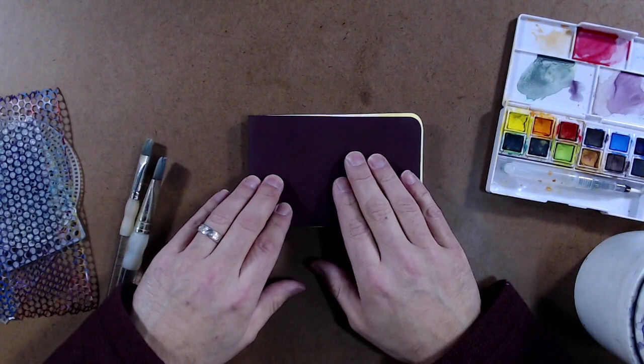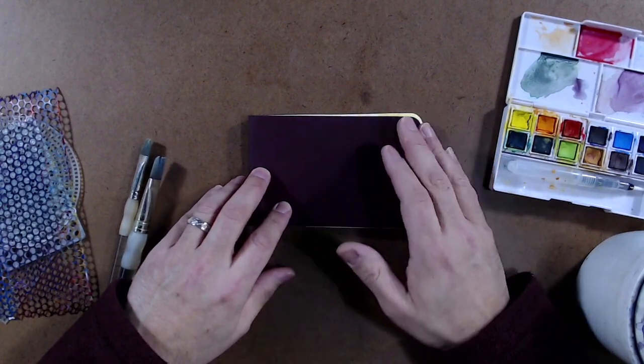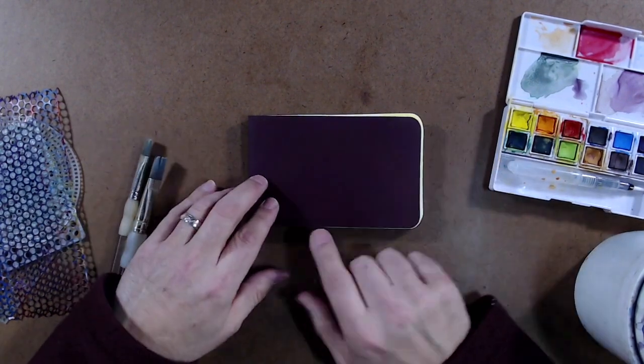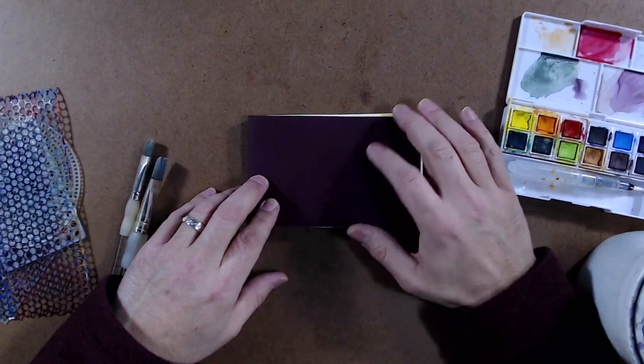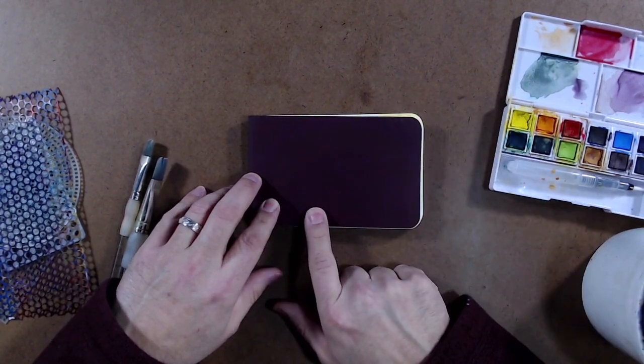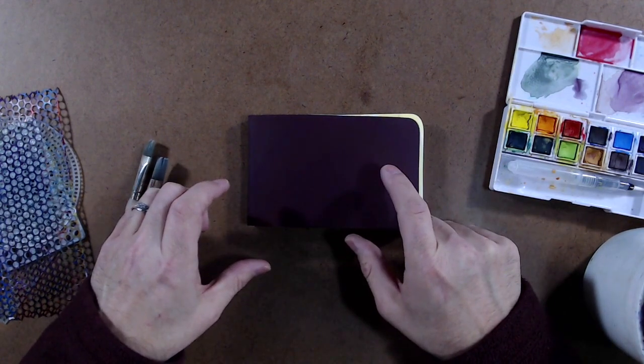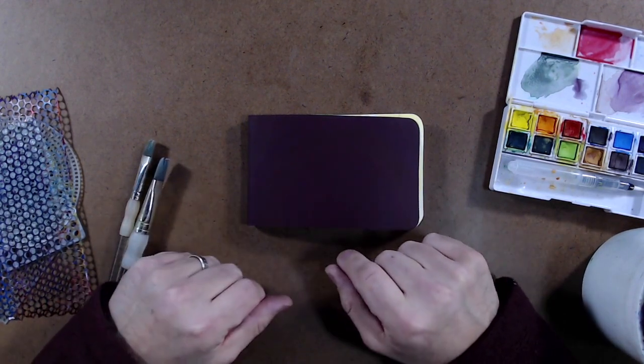It all started with this little book. I won a free book from Stillman and Birn, actually I won two of them, and this is the smaller of the two. It's a three and a half by five and a half inch landscape format sketchbook and I got really excited about it.